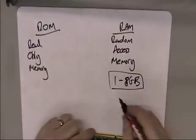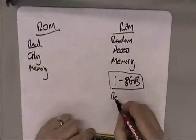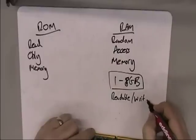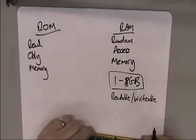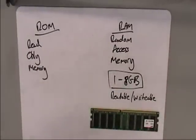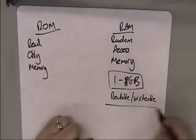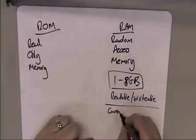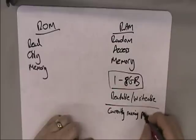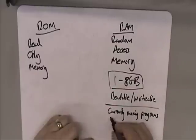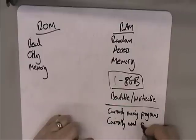So RAM is readable and writable — you can read from it and write to it. It's typically 1 to 8 gigabytes in size, and it's used for currently running programs and currently used data.